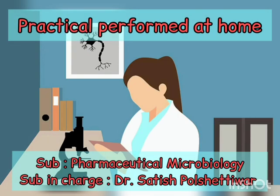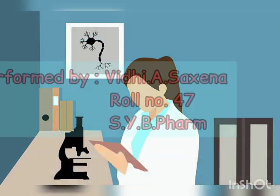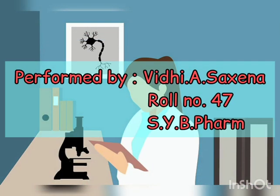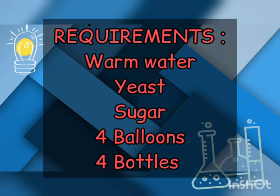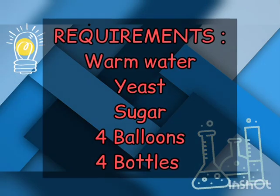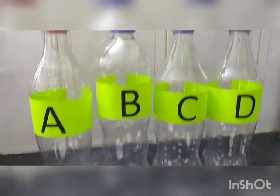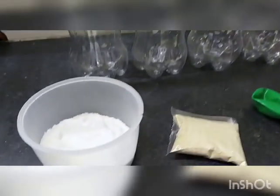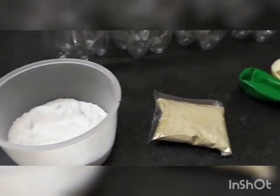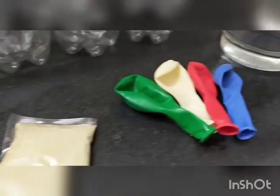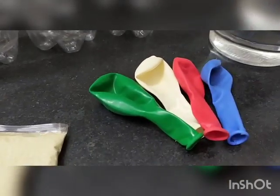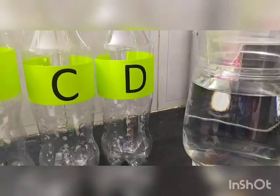Practical performed at home: Fermentation of yeast and sugar. Materials required: 4 bottles, sugar, yeast, 4 balloons, and warm water.